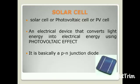What is a solar cell? Solar cell, also known as photovoltaic cell or PV cell, is an electrical device that converts light energy into electrical energy using photovoltaic effect. It is basically a PN junction diode, which is shown in the figure.